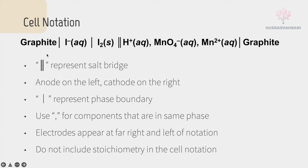For cell notation, the double vertical line represents the salt bridge — with the anode on the left and cathode on the right. The single vertical line represents a phase boundary, meaning a boundary between different phases or different states of matter, such as between a solid and an aqueous solution.